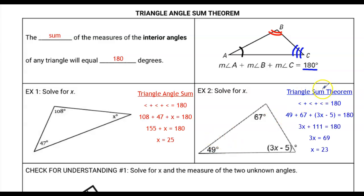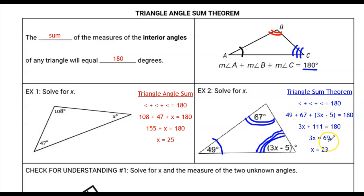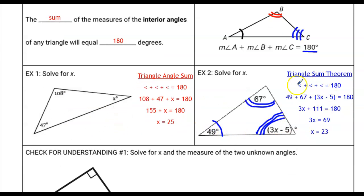We're going to fill out the triangle sum theorem the same exact way — identifying all three angles in the triangle and substituting them into the formula: angle plus angle plus angle equals 180. Then substituting in the expressions and combining like terms. This is going to work for any triangle. As long as you have two known angles and one missing angle, you can set up this equation and solve.